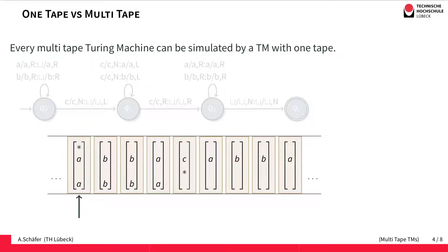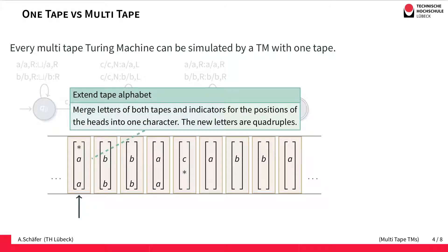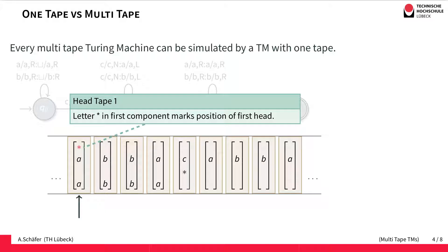The first solution we look at simply combines the knowledge of the head positions and the current letters into one letter of a new alphabet. The idea is to extend the tape alphabet: instead of the original alphabet we use 4-tuples as the extended tape alphabet. So this whole entry is actually one letter in one cell from the new tape alphabet, and the idea is that this new tape alphabet contains the indication of the head position and the contents of the two tapes. We have two head positions and two letters to take care of.